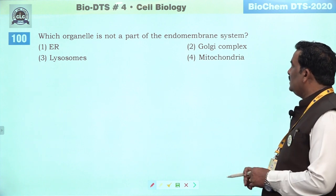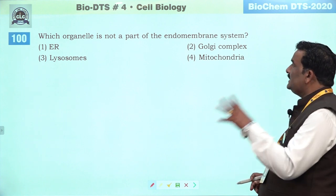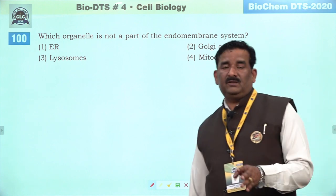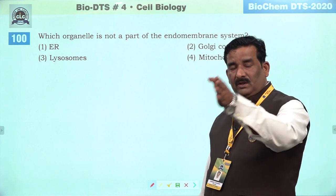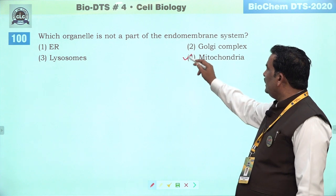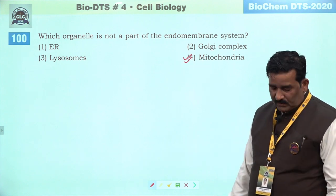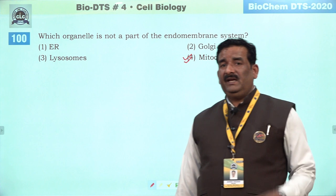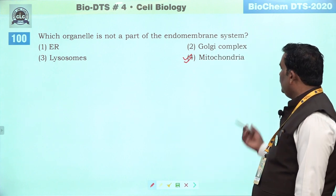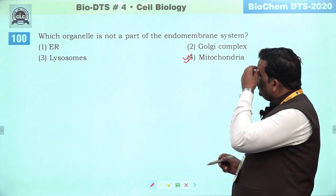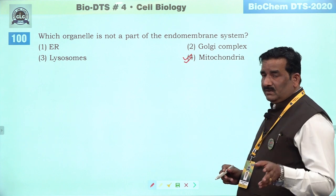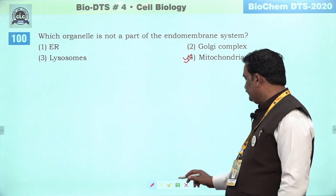Next question: which organelle is not a part of the endomembrane system. Endomembrane system mein wahi hote hain jo de novo nature se hote hain — ER se Golgi body, Golgi body se lysosome. But mitochondria are not prepared through the endomembrane system — yeh independent semi-autonomous cell organelle hai. Fourth is the right answer — mitochondria, chloroplast and peroxisome are not included in endomembrane system.